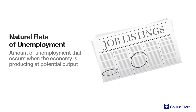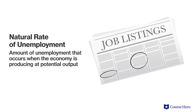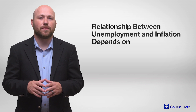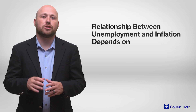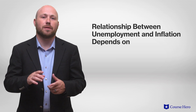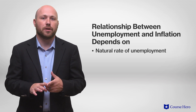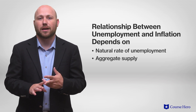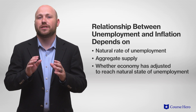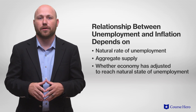This natural rate is the amount of unemployment that occurs when the economy is producing at potential output. The conclusion of this assertion is that there are multiple Phillips curves available for an economy, and the relationship between unemployment and inflation depends on the economy's natural rate of unemployment, the aggregate supply in the economy, and whether the economy has adjusted to reach the natural rate of unemployment.